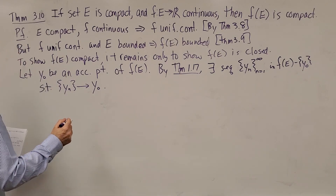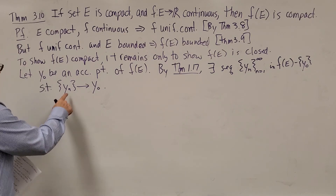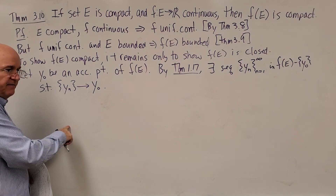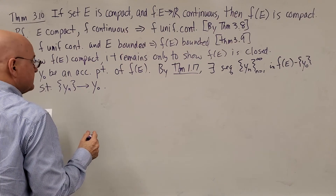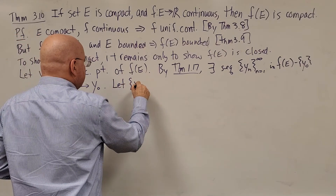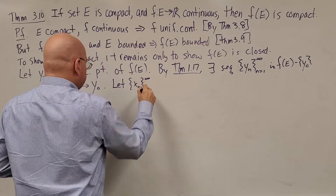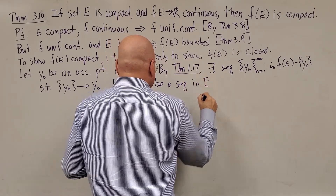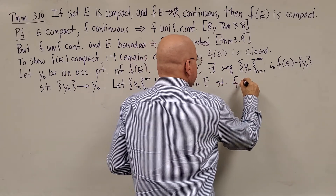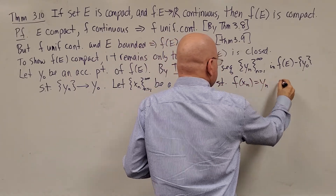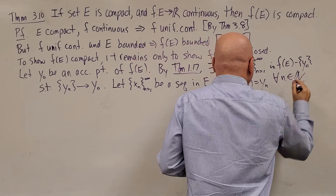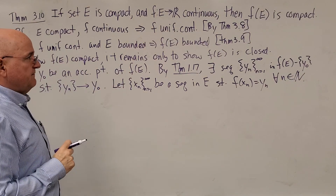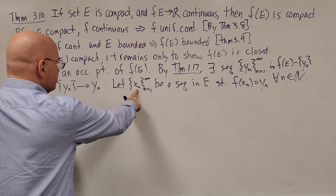For each Yₙ there is an Xₙ that maps to it — F(X₁) = Y₁, and so on. Let {Xₙ} be a sequence in the domain E such that F(Xₙ) = Yₙ for all n. Now we have a sequence Xₙ, but it may not be convergent. We know Yₙ converges to Y₀, but we don't know anything about the convergence of Xₙ.